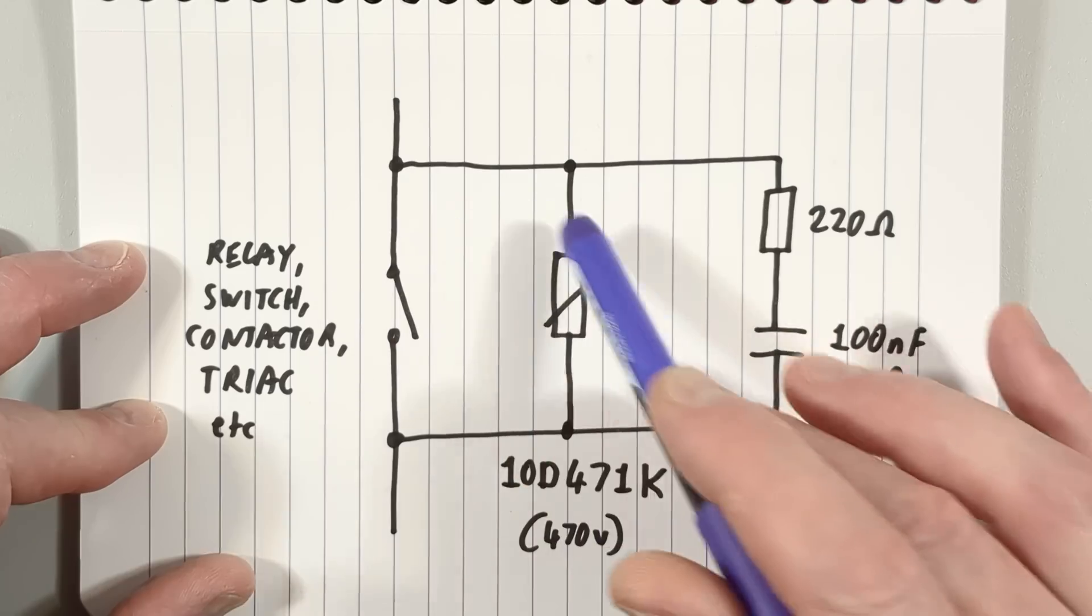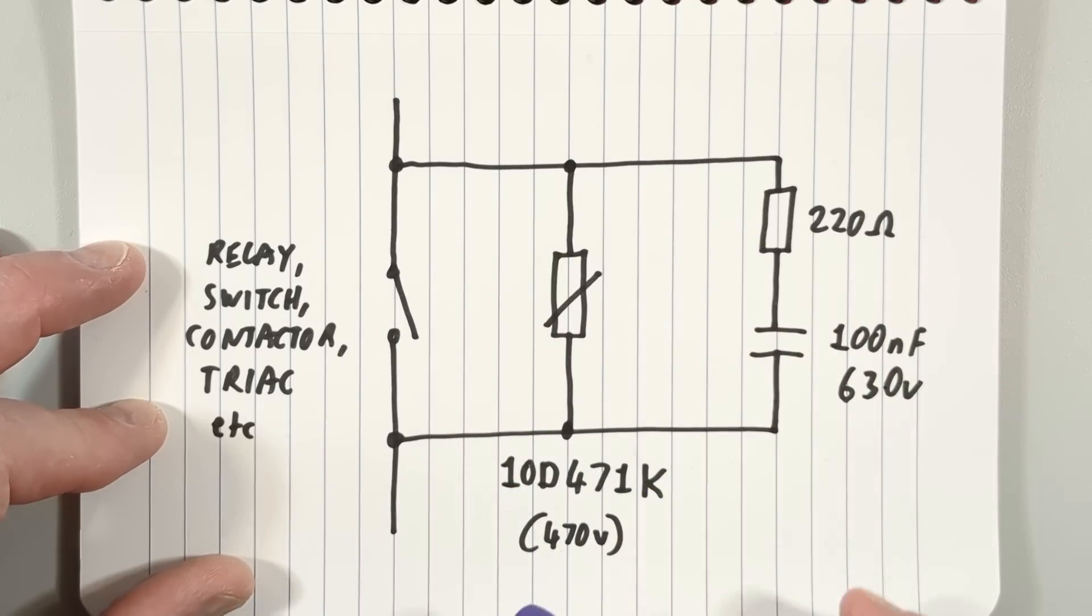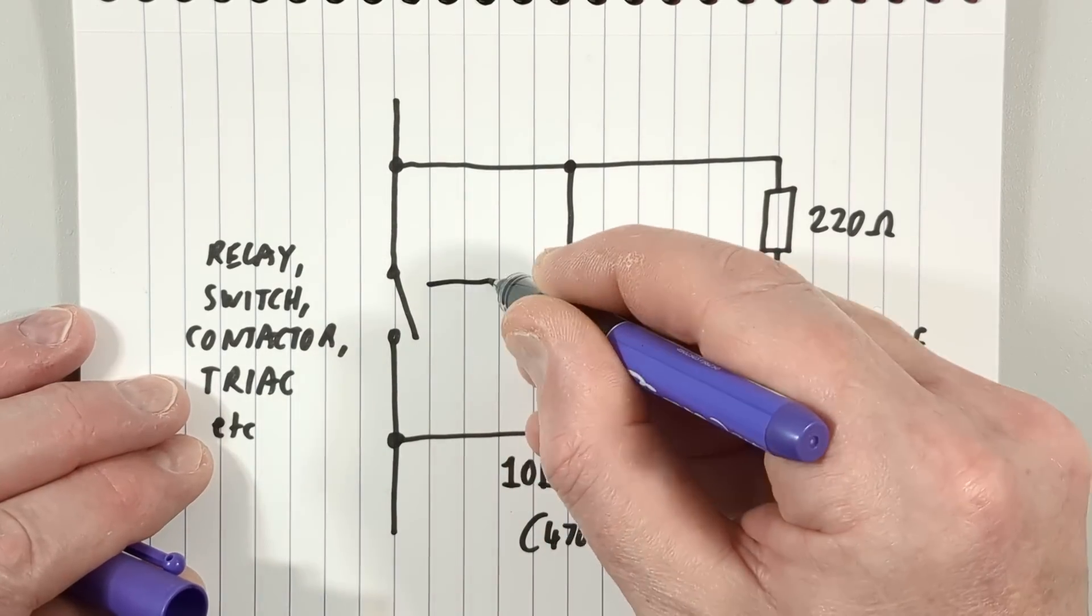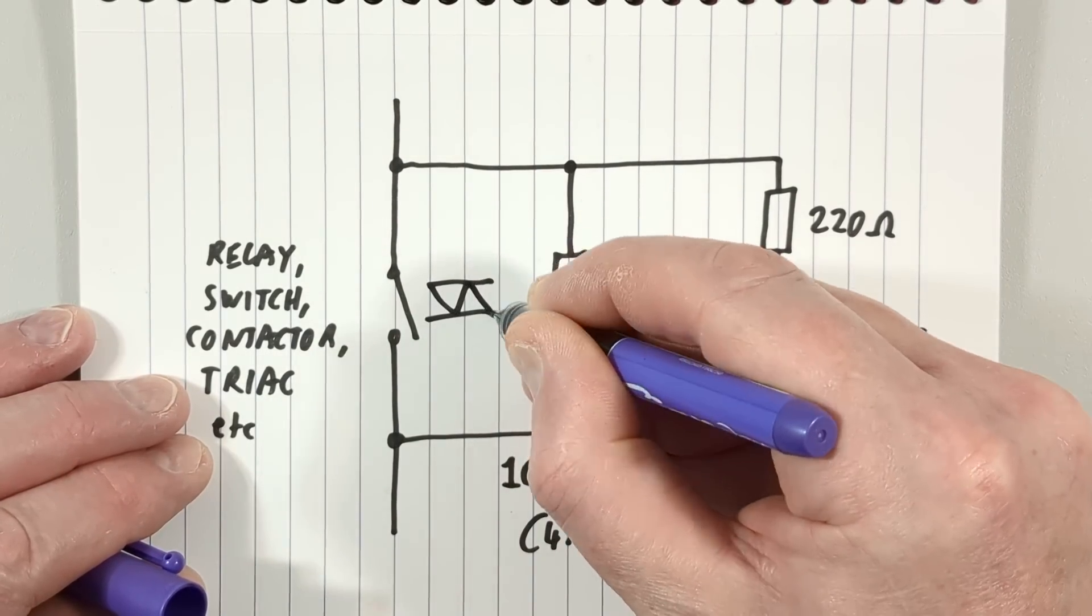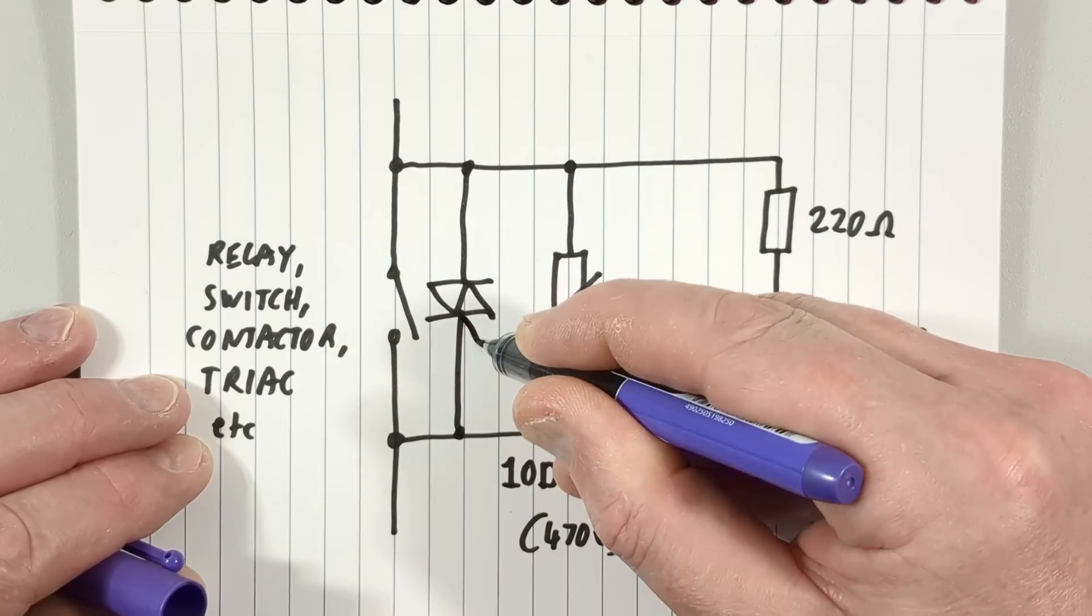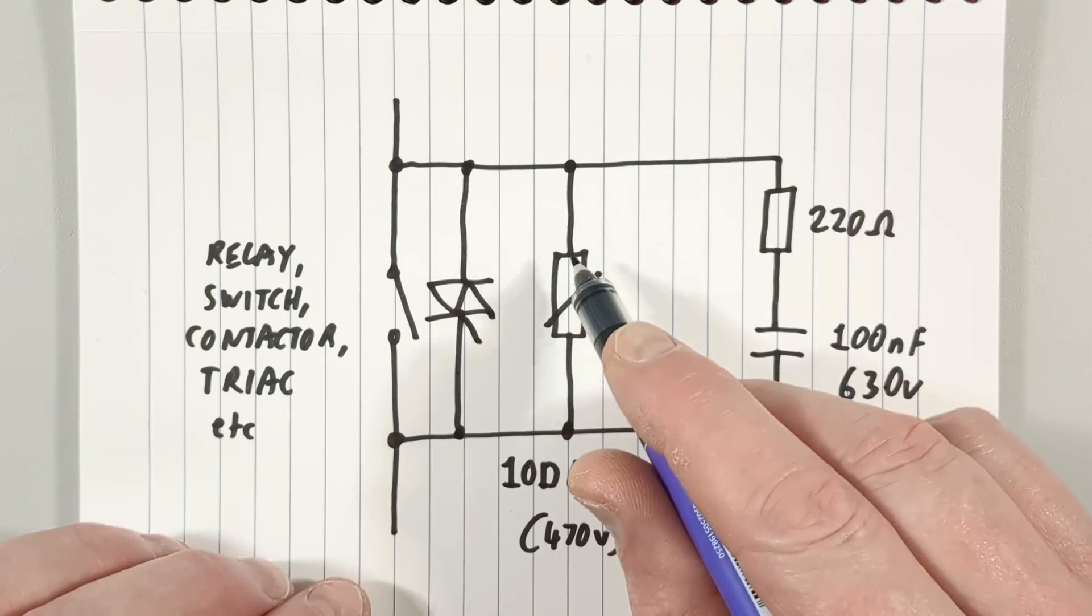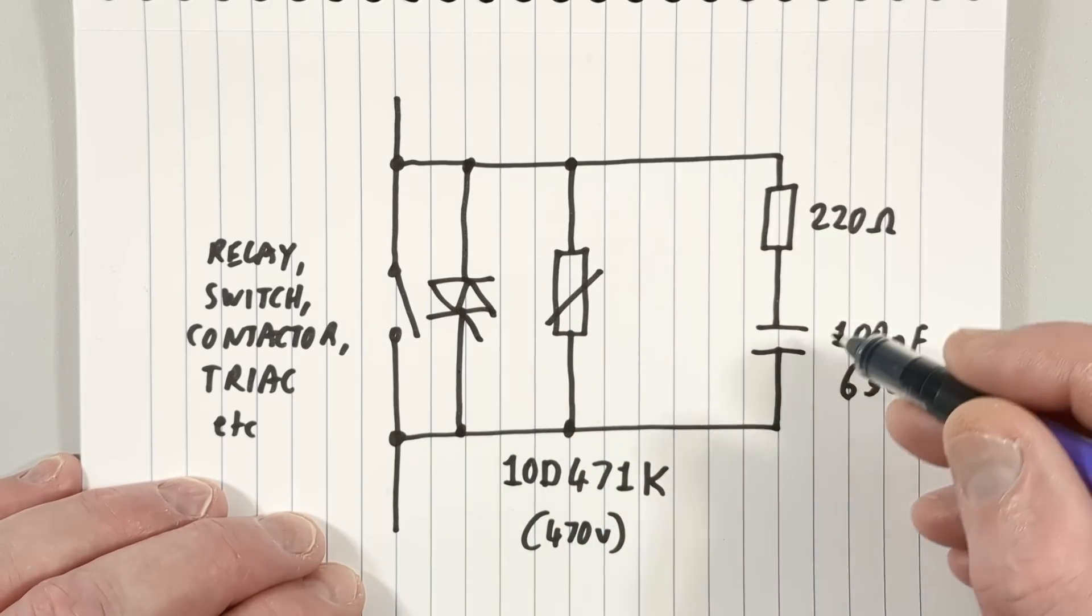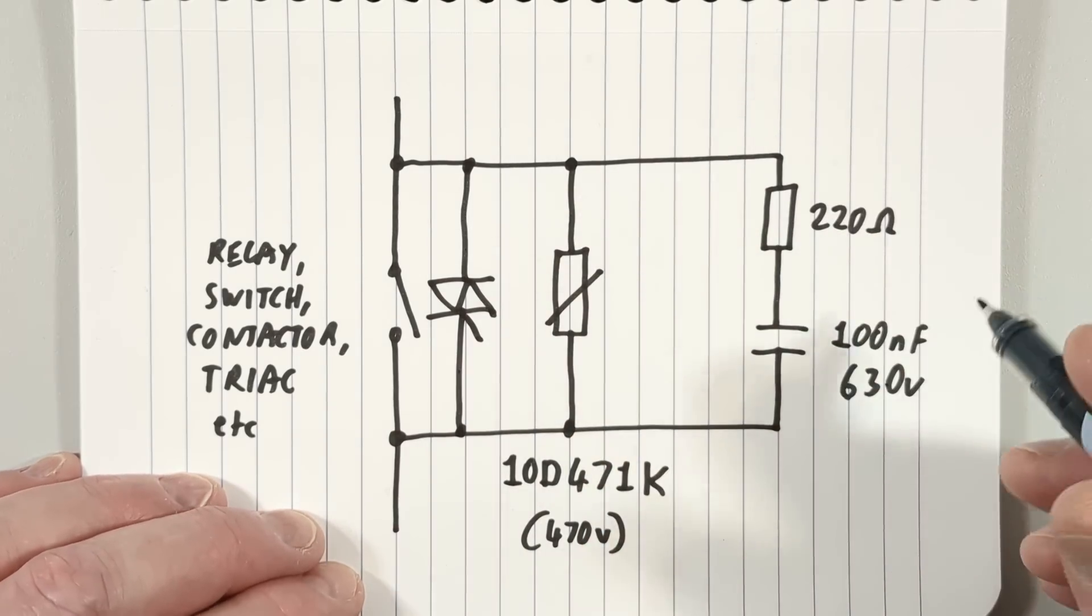These are also useful across things like triacs. When you've got a triac being used to switch loads, it's useful to clamp voltage spikes across it that could cause problems. That's what the metal oxide varistor can do, and the capacitor will also have that effect of clamping transient spikes.